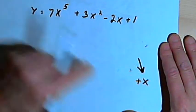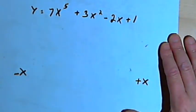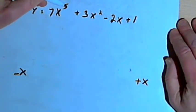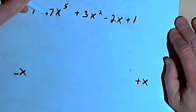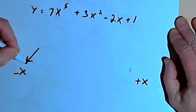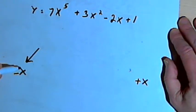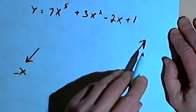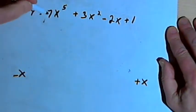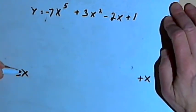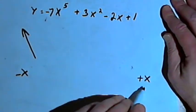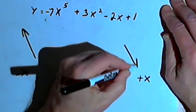General rules for odd degree polynomials: if the largest exponent is 3, 5, 7, or any odd number, and the lead coefficient is positive, then as x becomes more and more negative the y value becomes more and more negative, and as x becomes more and more positive the y value becomes more and more positive. When the lead coefficient is negative, it flips: as x becomes more and more negative, y becomes more and more positive, and as x becomes more and more positive, y becomes more and more negative.